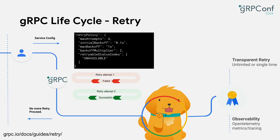If you configure observability, say OpenTelemetry, you can see retry information such as retry attempts and retry latencies on OpenTelemetry metrics and tracing.